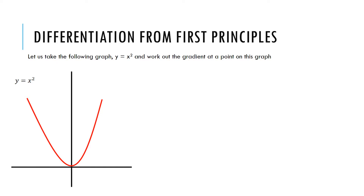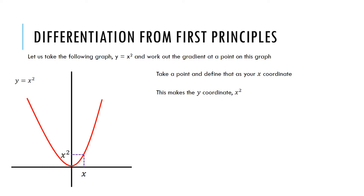So let's take a look at the following graph that can be described by the function y equals x squared — that is, y is equal to x squared at any point on that graph. Let's try and work out the gradient at any point on this graph, because you'll note that the gradient changes as you change x. If I were to take a point on that graph and define that as my x coordinate, then I can take a point in y and define that as my y coordinate, which of course will be equal to x squared because that's the function I'm working with.